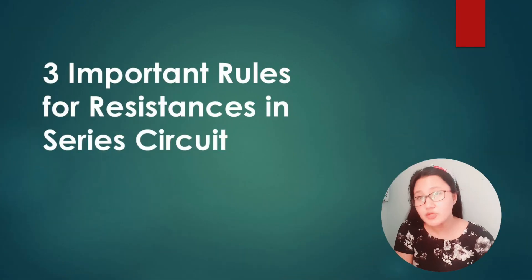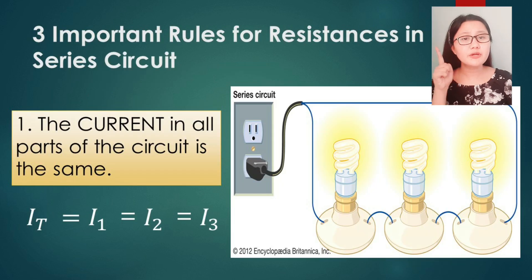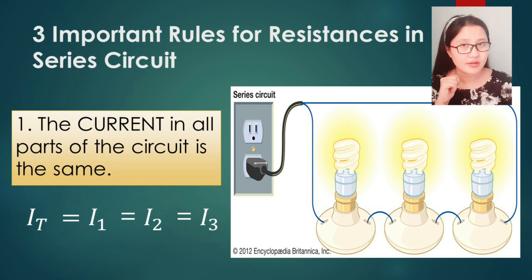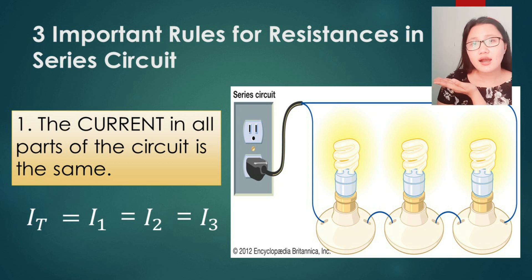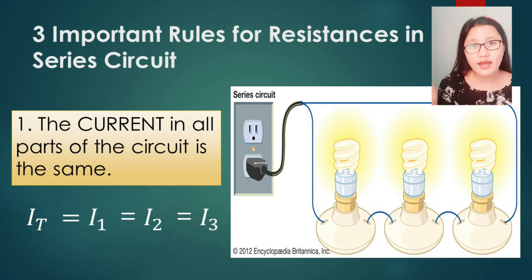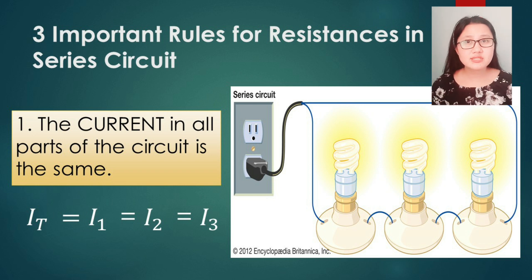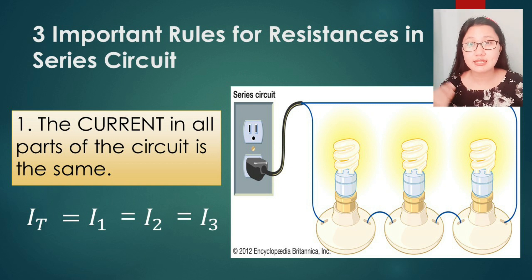Let us start with the three important rules in a series circuit. Number one: the current in all parts of the circuit is the same. As you can see, the total electric current is equal to the current of the first, second, and third resistor. So the electric current flowing through the series circuit is equal throughout — it is the same for all parts.